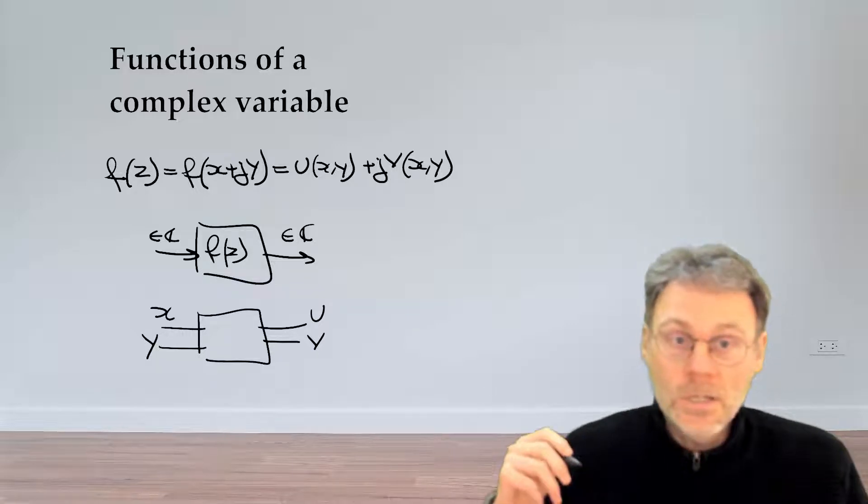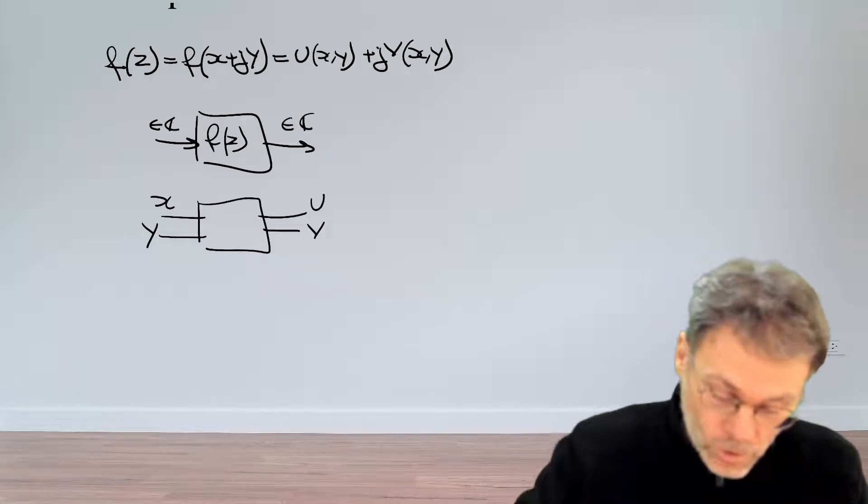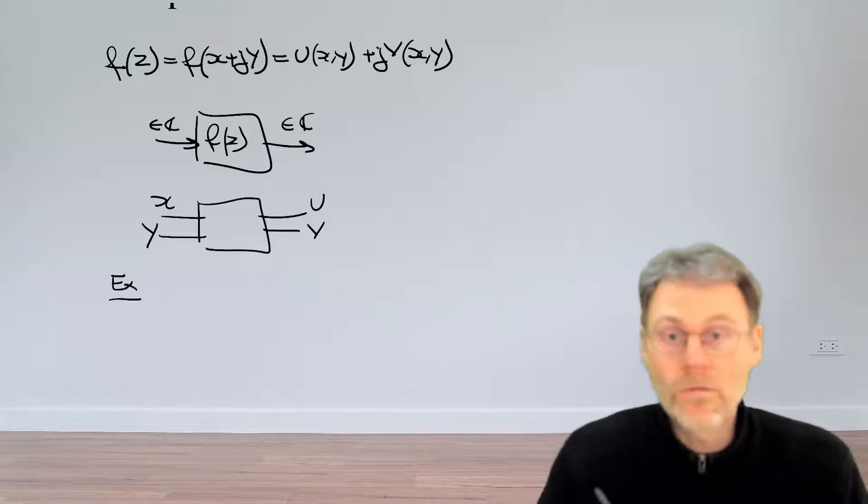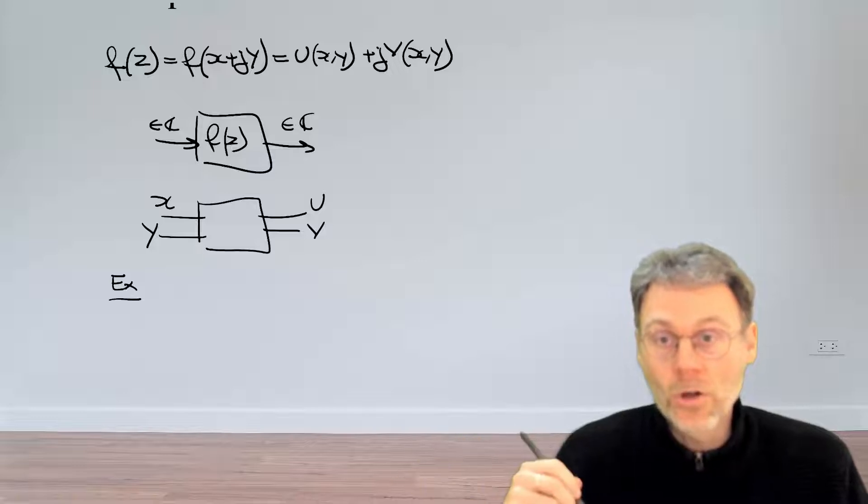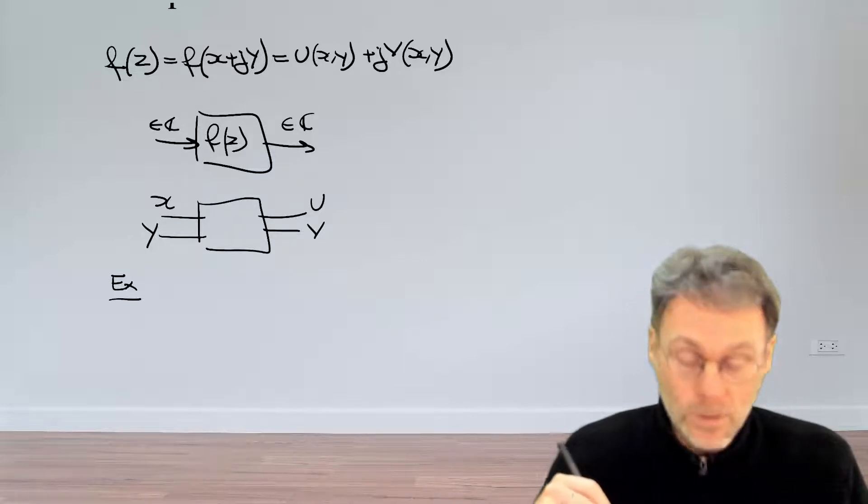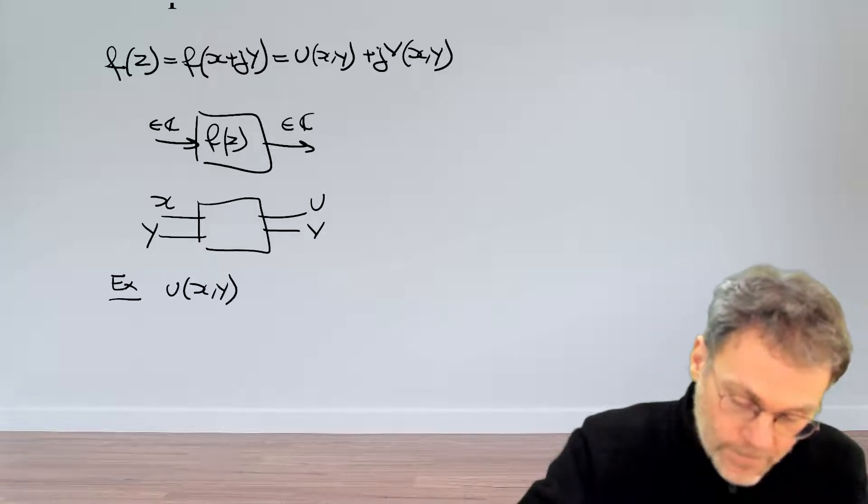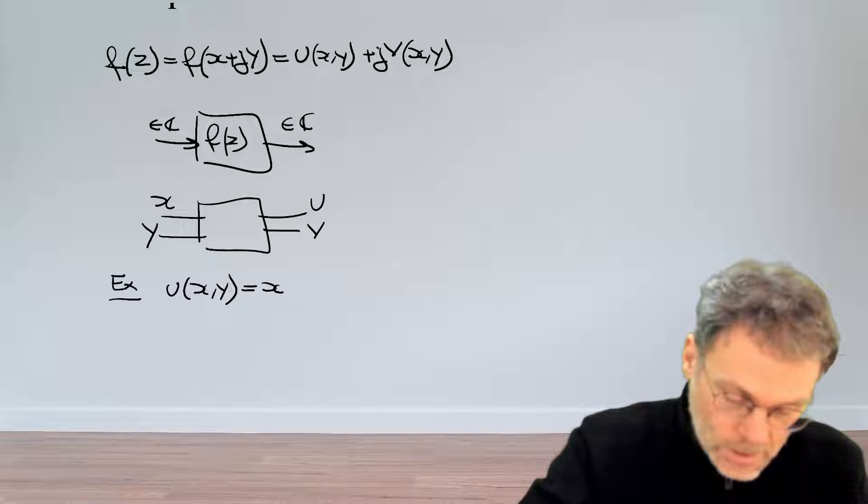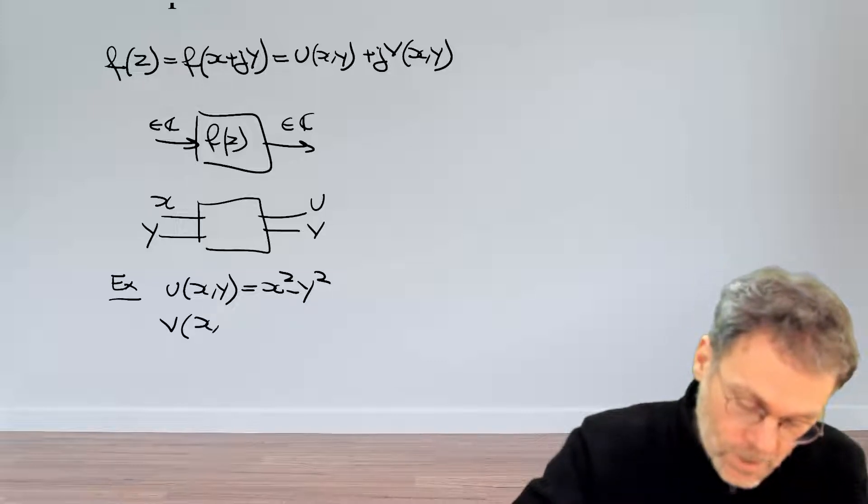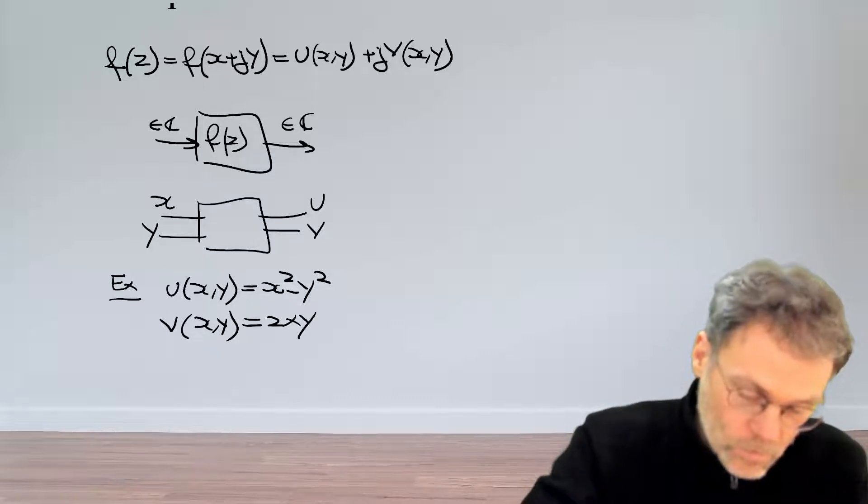Let's now see this in action and let's start by giving you two functions u and v and the question is can you figure out what the function is if you write it as a function of a single complex variable z. So for u of xy we're going to use x squared minus y squared and v of xy, let's say that's the function 2xy.